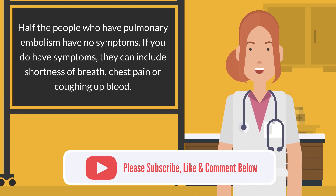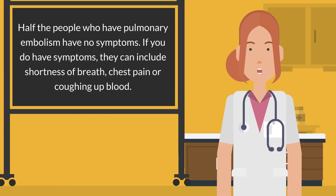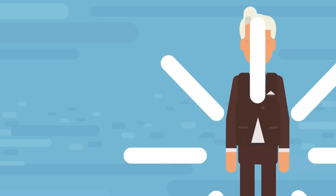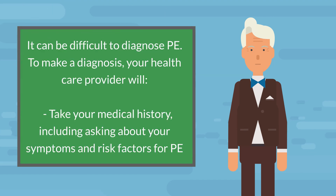Half the people who have pulmonary embolism have no symptoms. If you do have symptoms, they can include shortness of breath, chest pain, or coughing up blood. Symptoms of a blood clot in the leg include warmth, swelling, pain, tenderness, and redness of the leg.